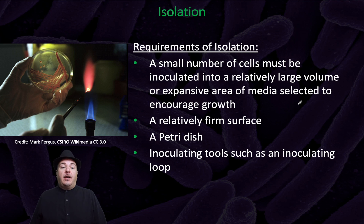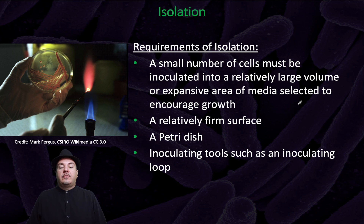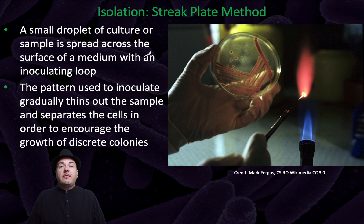So how do we obtain isolation? A small number of cells must be inoculated into a relatively large volume or expansive area of media selected to encourage growth. It's done on a relatively firm surface like a petri dish and uses inoculating tools such as an inoculating loop. One way to obtain isolation is the streak plate method, where a small droplet of culture or a sample is spread across the surface of a medium using an inoculating loop.